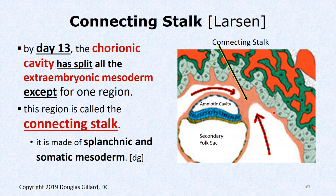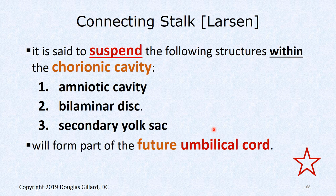Here's a good board question: what structures are suspended by the connecting stalk within the chorionic cavity? The answer includes: the amniotic cavity, the amnion layer, the bilaminar disc, the epiblast and hypoblast, Heuser's membrane, a little splanchnic mesoderm, and the secondary yolk sac.